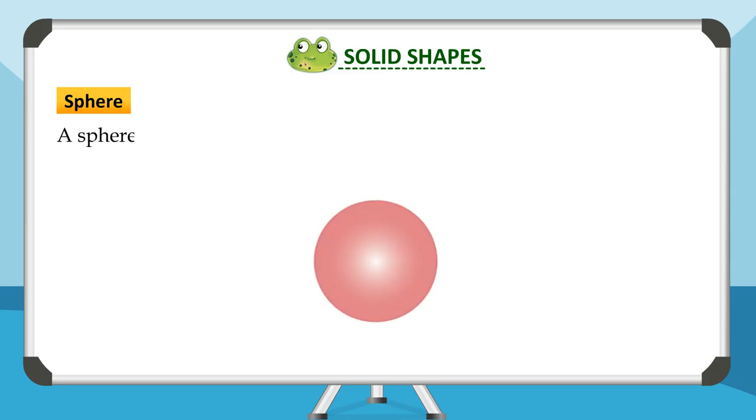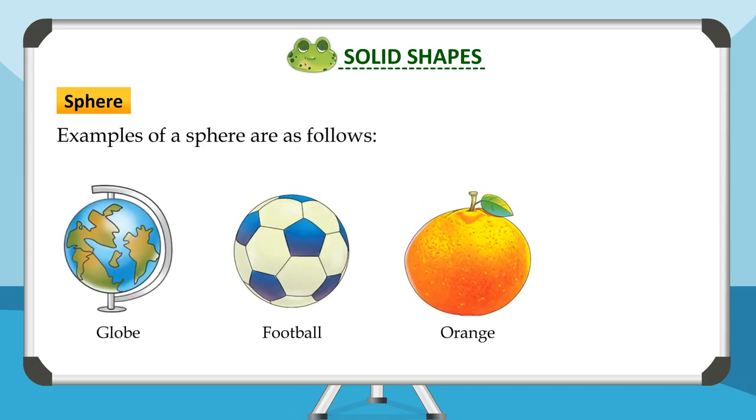A sphere has no corners and no edges. It has only one curved face. Examples of a sphere are globe, football, orange, and ball.